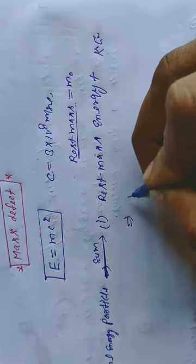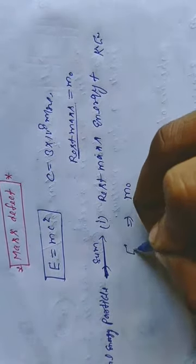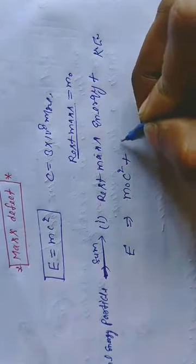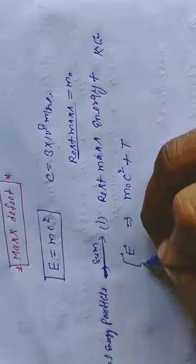The rest mass energy is m0 c squared, where m0 is the rest mass. Kinetic energy we denote as T.